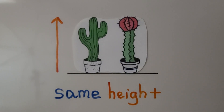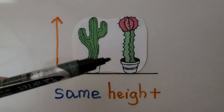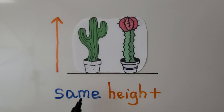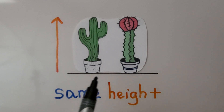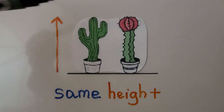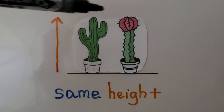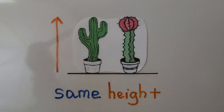Here we have two cactus plants that are about the same height. They both start at the same line on the bottom, and they both end at about the same place on top. They are about the same height.